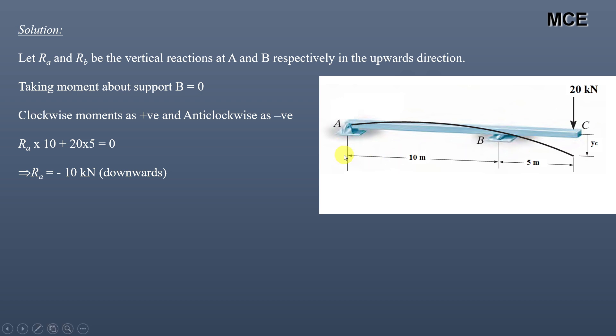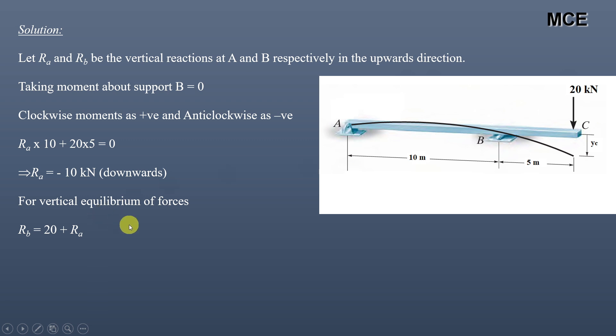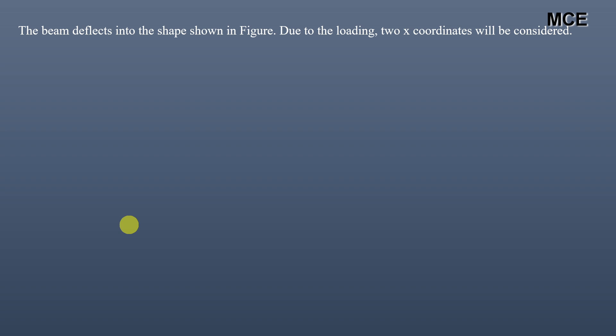So RA is in the downward direction. For vertical equilibrium, upward forces must equal downward forces. Since RA is now downward, RB in the upward direction equals 20 + 10, giving RB = 30 kN upward. Now, after finding the support reactions, we will find the bending moment equations.